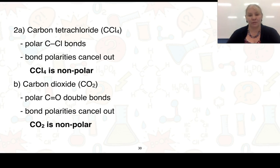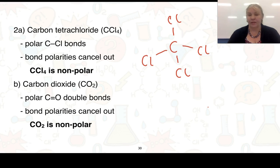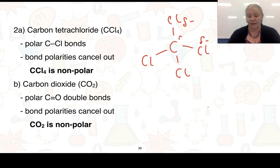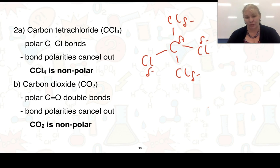Carbon tetrachloride (CCl₄) has carbon–chlorine bonds: carbon is 2.5 and chlorine is 3.0, giving a difference of 0.5, which classes them as polar. We can place partial positives on carbon and partial negatives on the chlorines all around the structure. However, even though there are polar bonds, the shape is very symmetrical with electrons heading outward equally, so the overall molecule is non-polar.